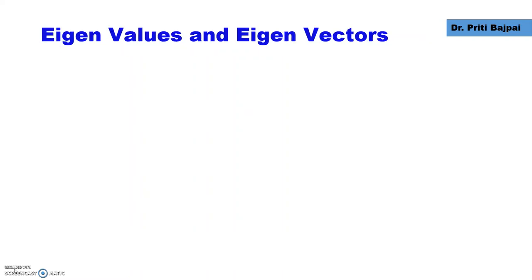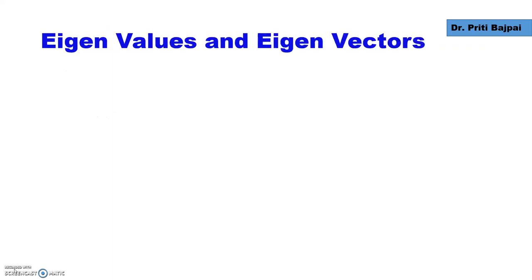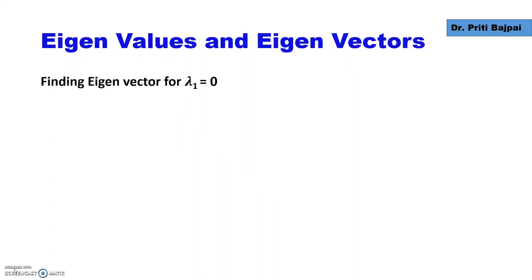This gives us the equation lambda cubed minus 4 lambda squared plus 4 lambda plus 0 equals 0. Pulling out lambda, we get lambda equals 0, or lambda squared minus 4 lambda plus 4 equals 0. This gives us three roots: lambda 1 equals 0, lambda 2 equals 2, and lambda 3 equals 2.